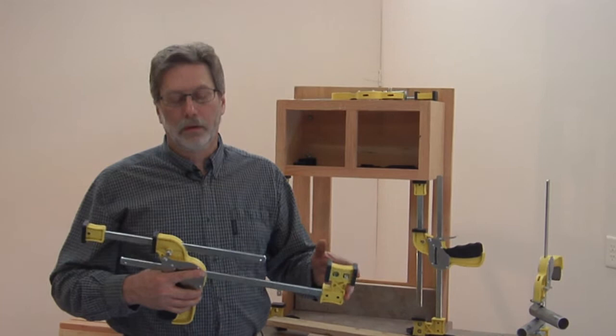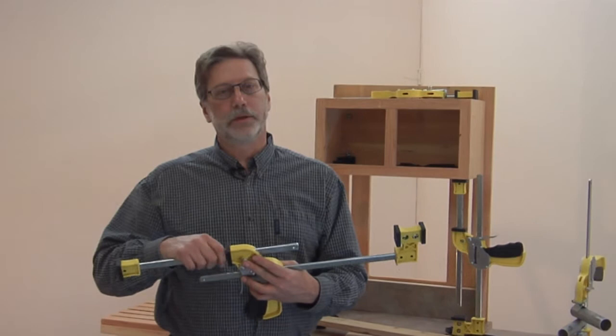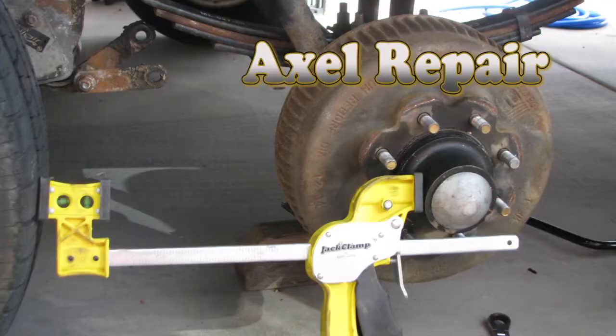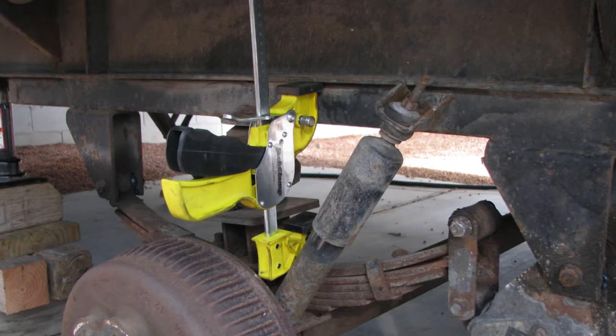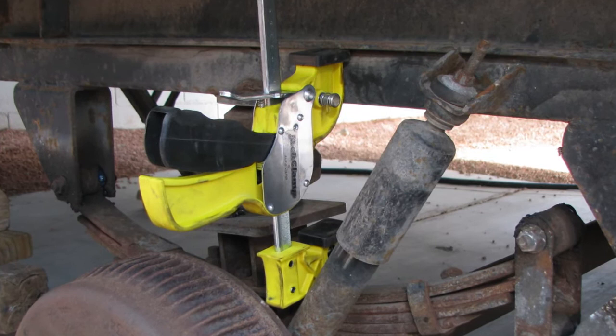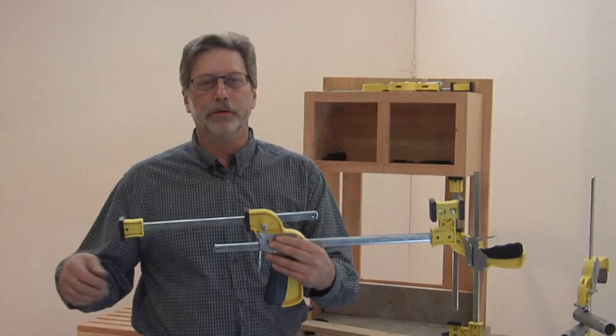Also in the spreading mode, we had a customer that called us and sent us some pictures of how he repaired the axles on his trailer. The springs broke on his trailer, and when he jacked the trailer up both the axles came together, and he had to spread them apart to get the new springs on. He used the clamp in the spreading configuration to get the axles back in the correct position to reinstall the new springs.